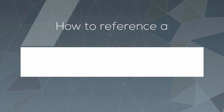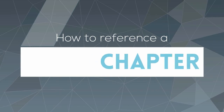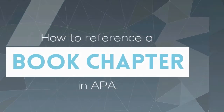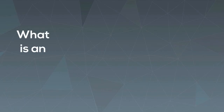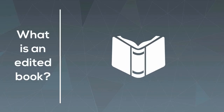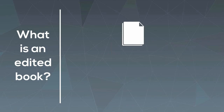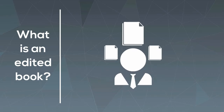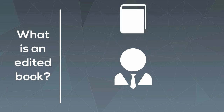Hello. In this video, you will learn how to reference information taken from a chapter in an edited book, in APA format. So, what is an edited book? An edited book is a collection of book chapters written by different authors. The editor or editors bring these book chapters together.